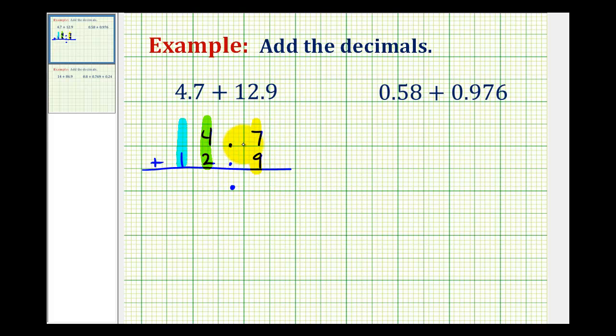As long as we bring this decimal point down into our sum we'll add as we normally do. Seven plus nine is sixteen. Carry a one. One plus four plus two is seven. And we have a one in the tens column. So four and seven tenths plus twelve and nine tenths is equal to seventeen and six tenths.